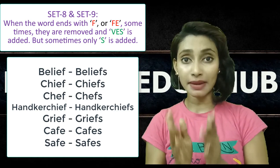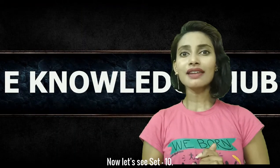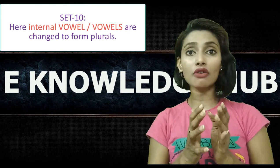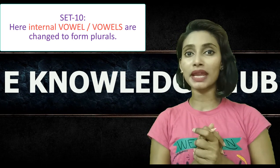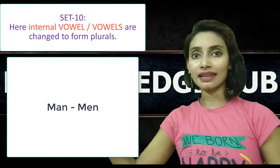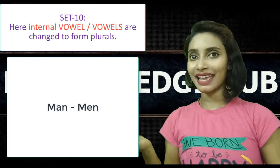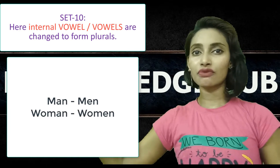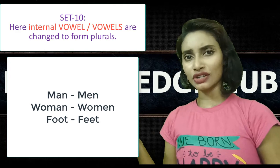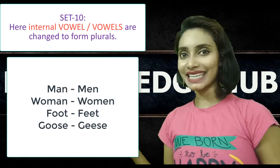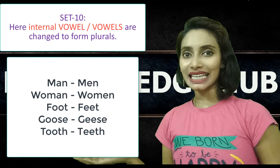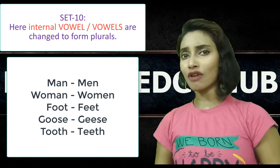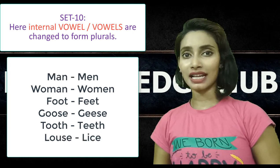Now let's see set 10. In set 10, the internal vowels of the word change to make the plural. For example: man, men — A changes to E; woman, women; foot, feet; goose, geese; tooth, teeth — internal vowels change to form plurals. In addition, one more word: louse, lice.